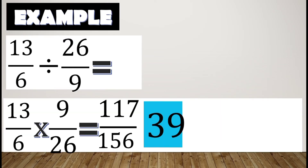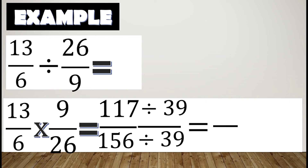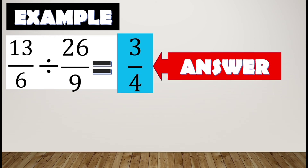We divide using thirty-nine to simplify our fraction: one hundred seventeen divided by thirty-nine equals three, and one hundred fifty-six divided by thirty-nine equals four. Therefore, the simplified form is three-fourths.